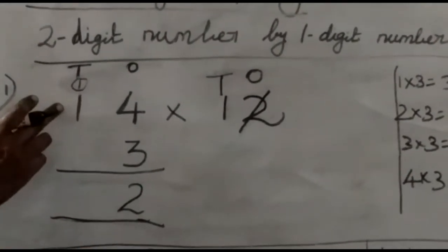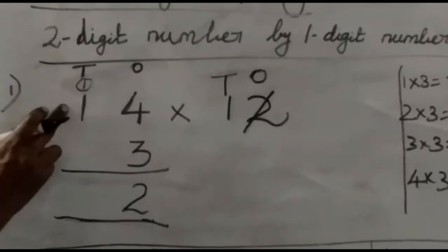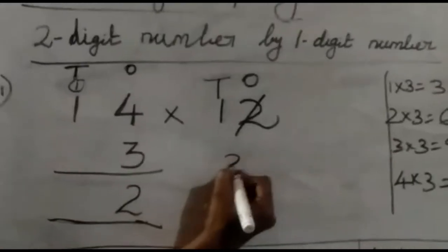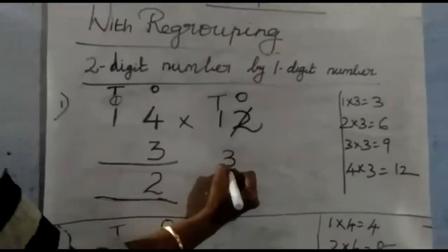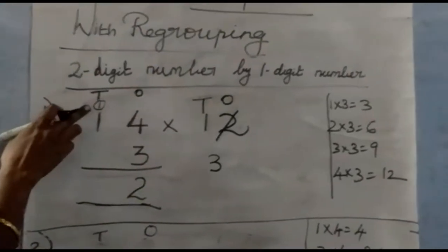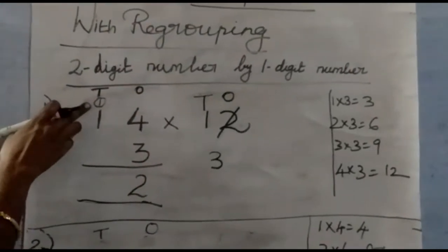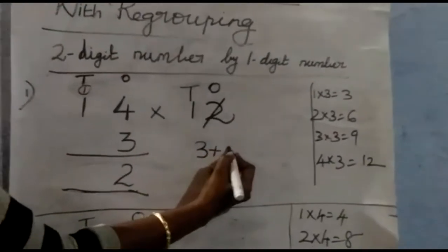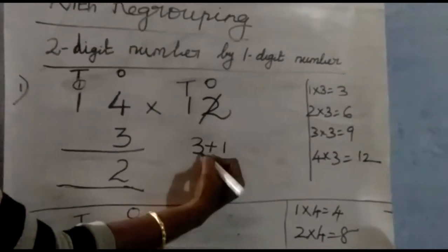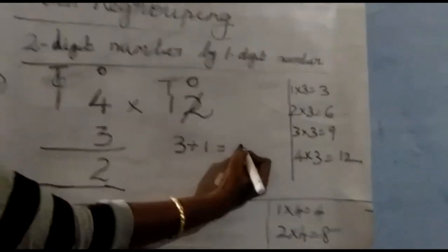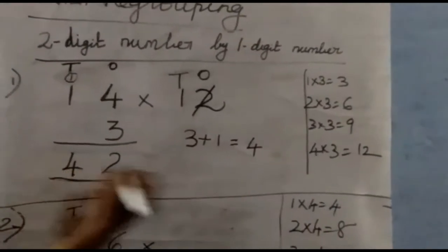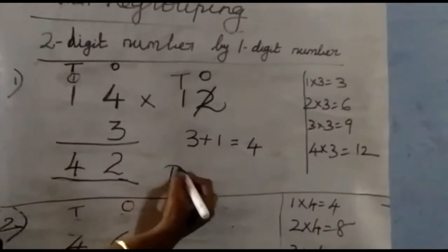Next, move on to the tens place. One three is three. Put the three on the side. What is the remainder we have? One. So add one with three: three plus one is four. So the product equals 42.